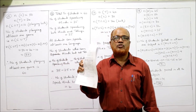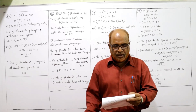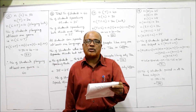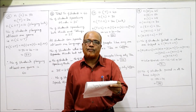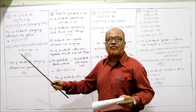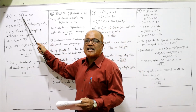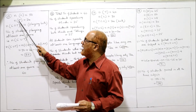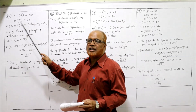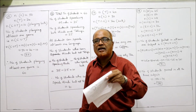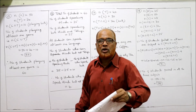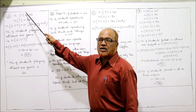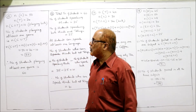Problem 15: In a certain college, 50 students play cricket, 20 play tennis, and 10 play both. So we have two sets — students playing cricket and students playing tennis. In notational form: N(C) = 50 (C for cricket), N(T) = 20 (T for tennis), and N(C ∩ T) = 10, meaning students playing both cricket and tennis.